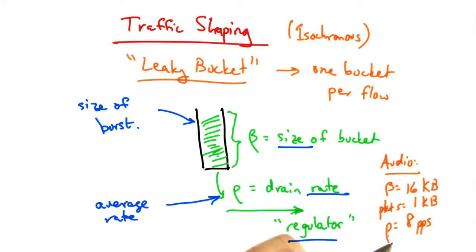The regulator's rate of 8 packets per second, however, would ensure that the audio rate would be smooth to an average rate not to exceed 8 kilobytes per second or 64 kbps. Setting a larger bucket size can accommodate a larger burst rate.